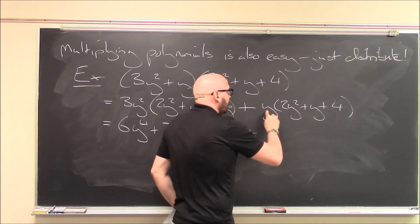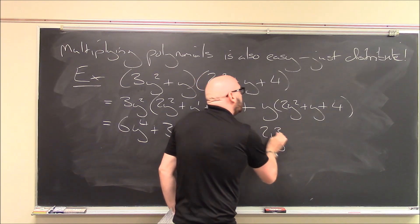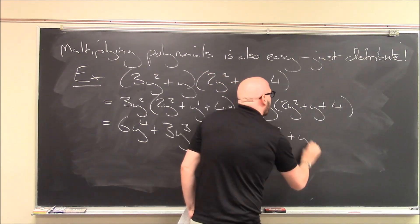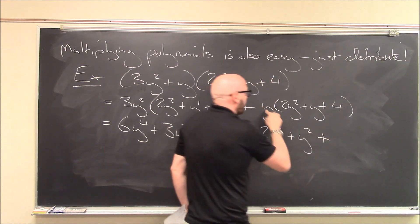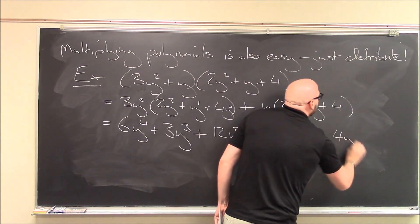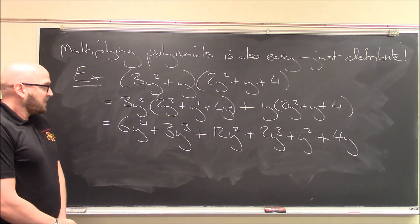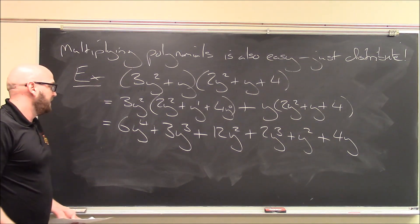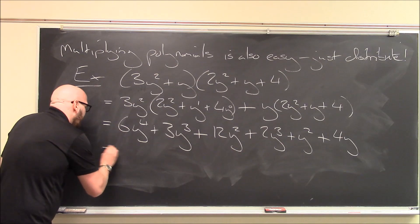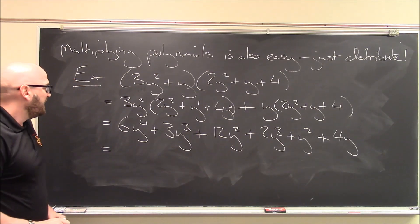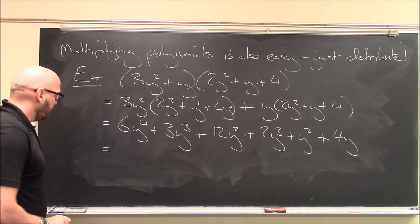And we just have to continue. Do this for this guy. y times 2y squared is 2y cubed. y times y is y squared. And plus y times 4 is 4y. So, we've successfully multiplied these two polynomials together. Usually, now, though, you wouldn't leave it in this form. This is kind of ugly. We would want to group all the like terms together again.